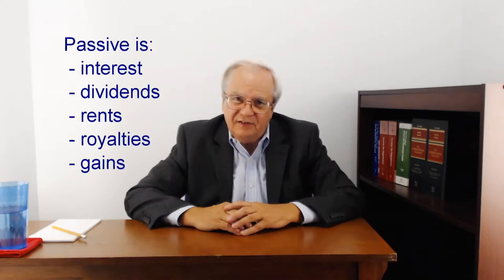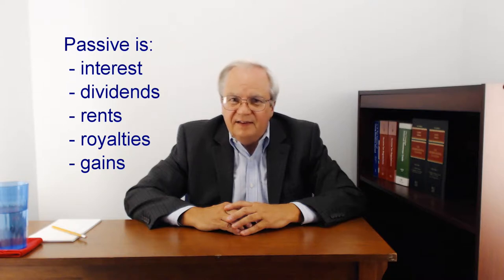The passive basket includes interest, dividends, rents, royalties, certain foreign exchange gains, and gains on disposition of property that generate this sort of income. We then apply the look-through rule and the high-tax kick-out rules to see if we treat the income as not passive.